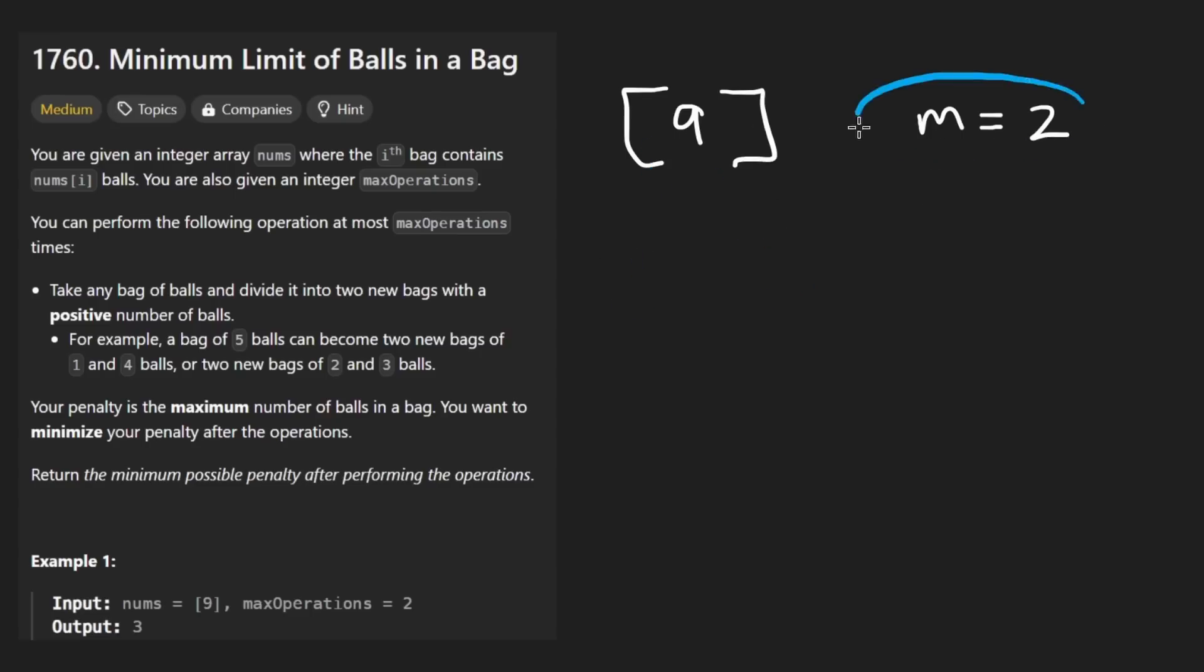After we perform the operation, what we want is the maximum element remaining to be minimized. That's kind of confusing wording, so let's look at an example. Suppose I split this into 2 and 7, and then I split the 7 into maybe 4 and 3. This is what we have left over. The maximum among all of these is a 4. What we want to do is minimize the maximum. Right now it's 4. Could we have made it smaller?